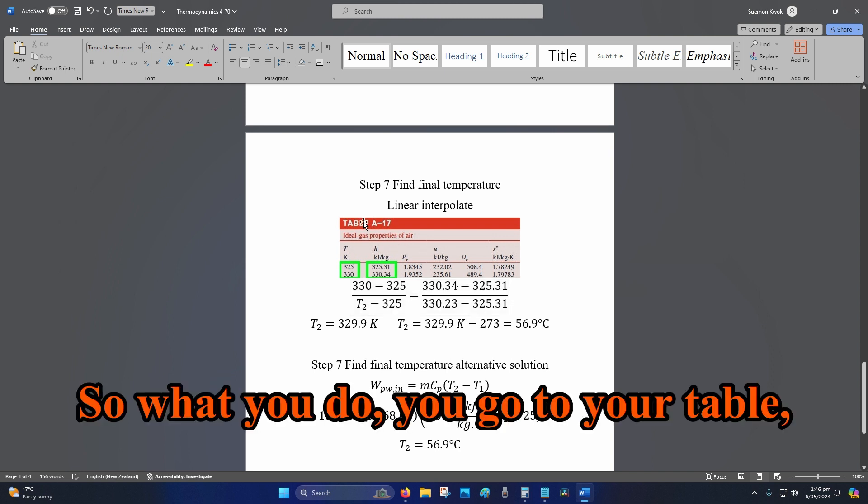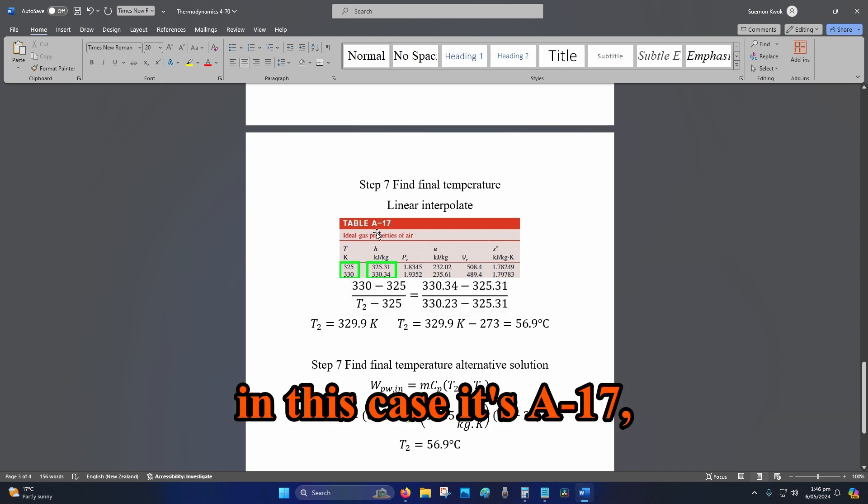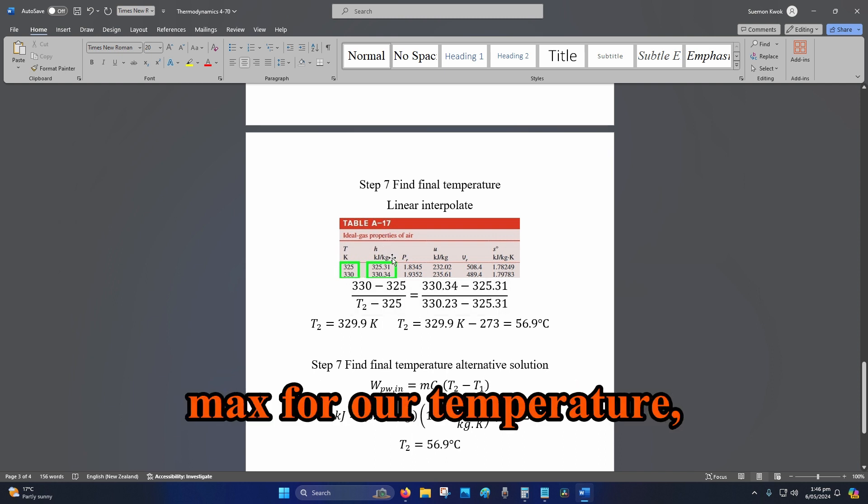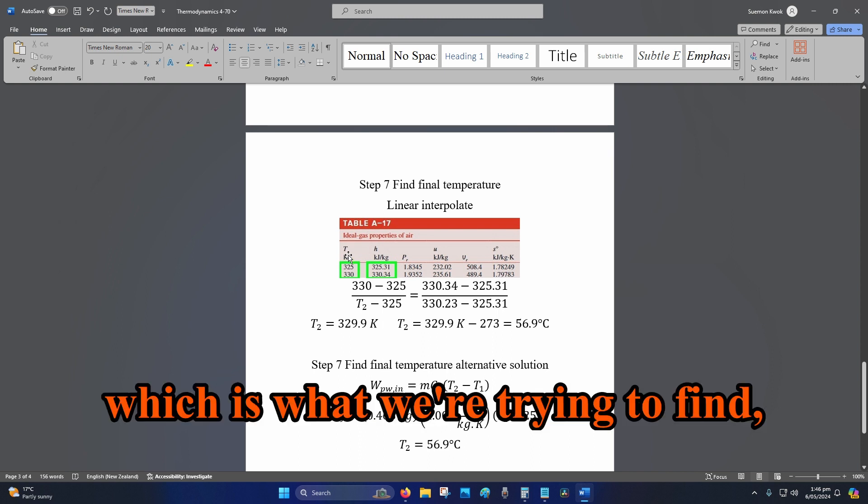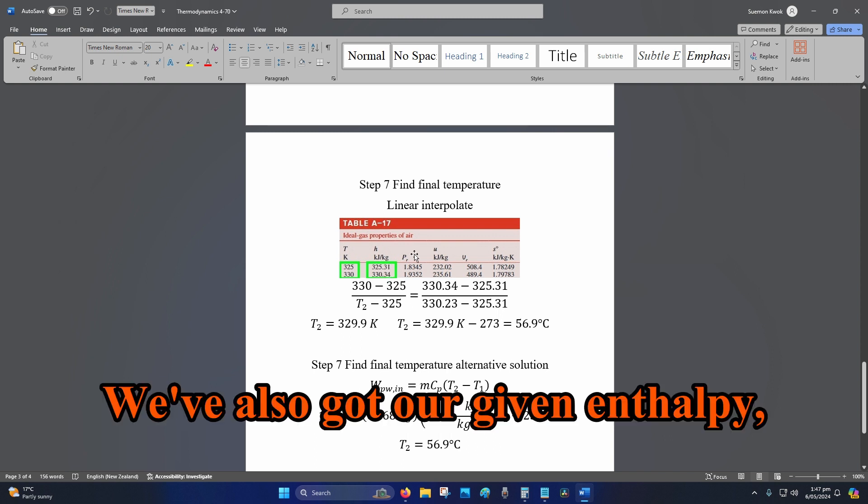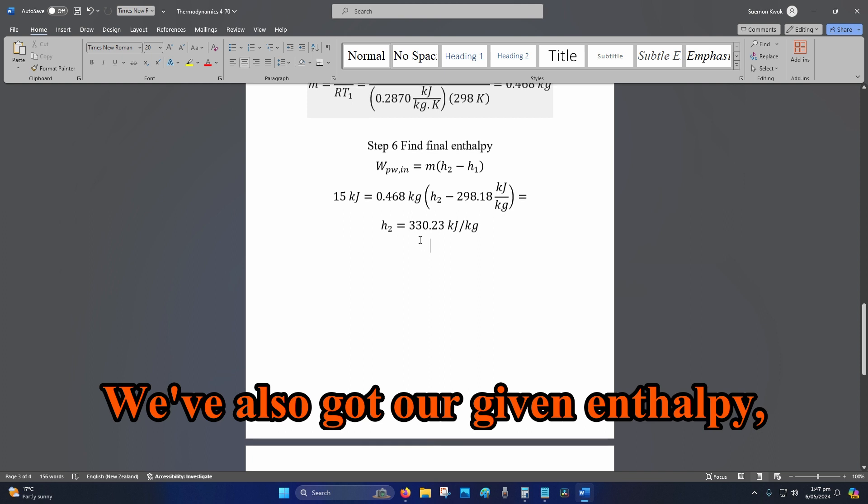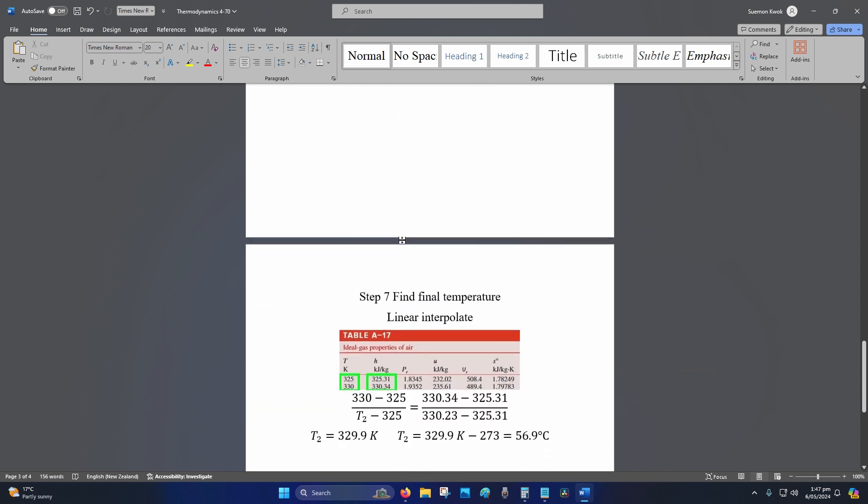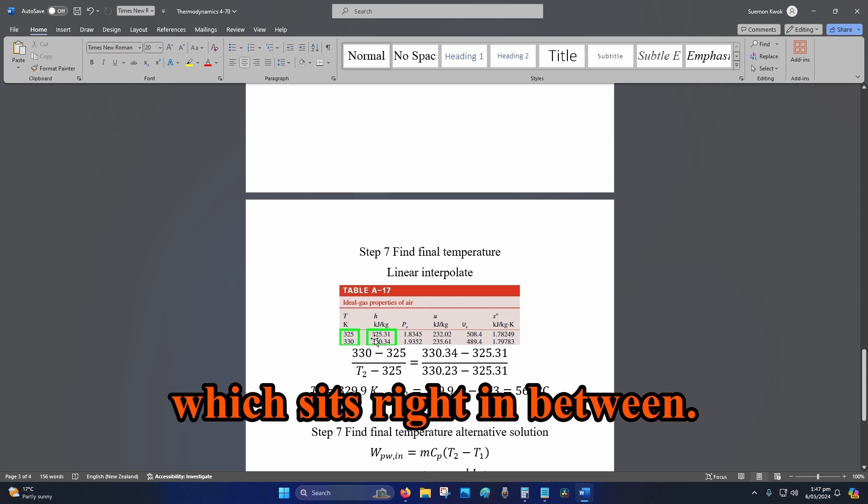So what you do, you go to your table, in this case it's A-17, and we've got our min and max for our temperature, which is what we're trying to find, and we've got our min and max for our enthalpy. We've also got our given enthalpy, which is h2, our final enthalpy, which sits right in between.